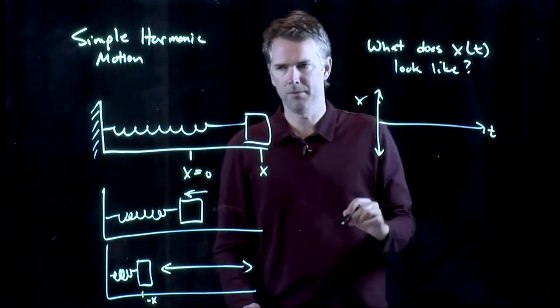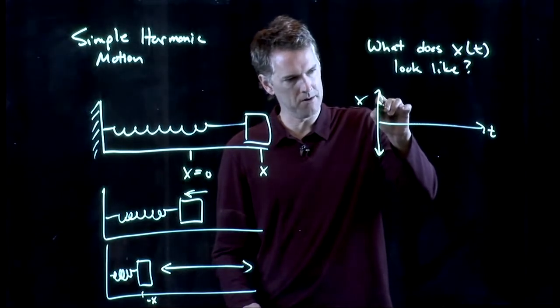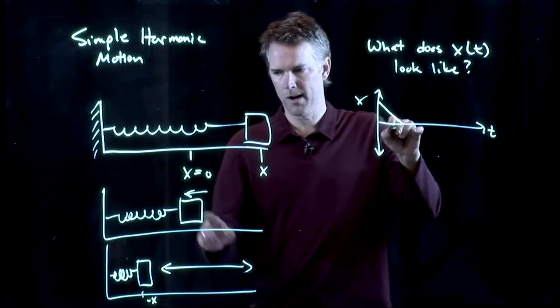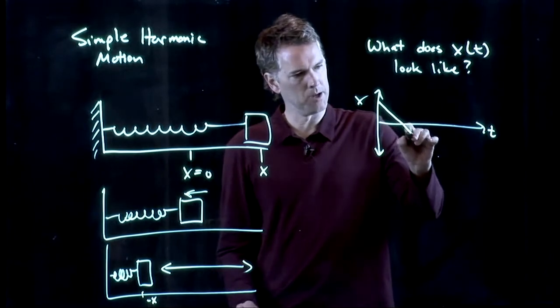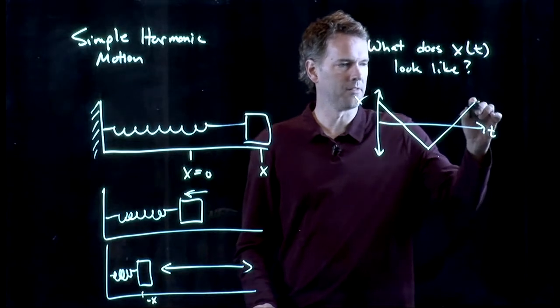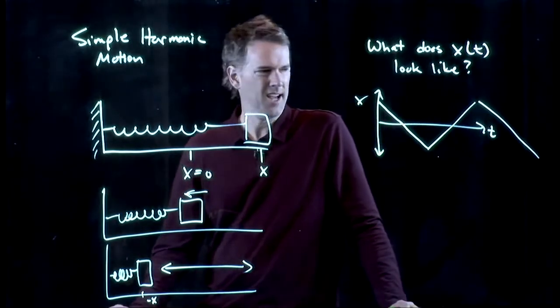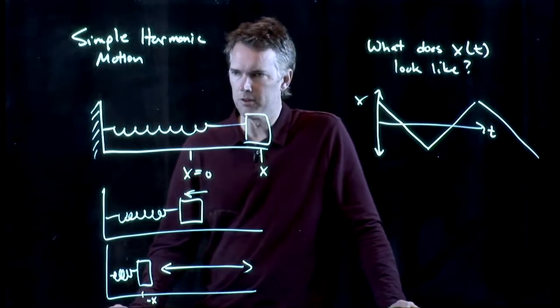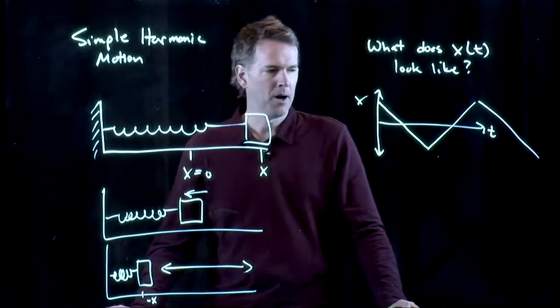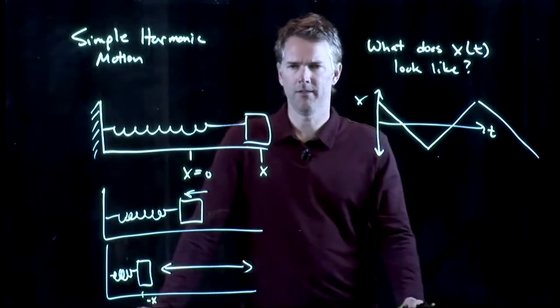It started up here at some amplitude. It moved to the left, which means x was going down. It went through x equals zero. And then it went to some negative amplitude. And then it goes the other way. And it just does that over and over again. That is a possible solution to this problem. But it looks a little funny. Does anybody not like the graph that I just drew?